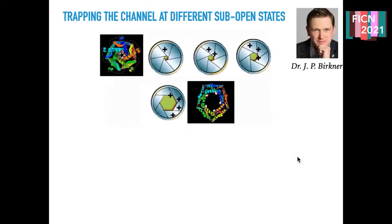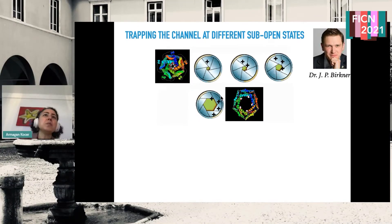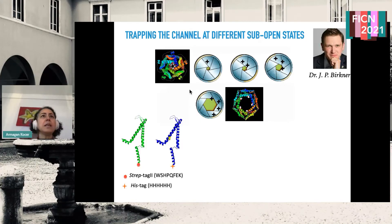The challenge was that this is a homopentamer. If you make a cysteine mutation with a single gene, you end up with five cysteines in the pore. How could you control the number of charged molecules in the pore? My idea was to trick the cells by giving the gene twice: one encoding a native subunit and the second encoding a cysteine in the hydrophobic region.